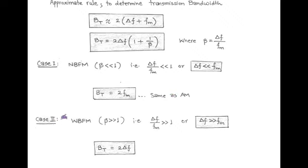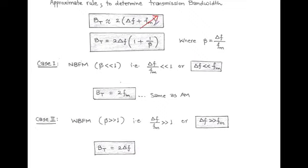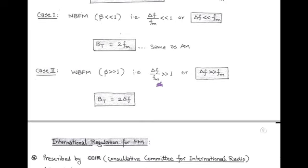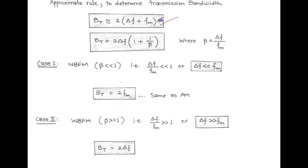Next, in the second case — that is for wide band FM — we have modulation index β greater than 1 radian. So accordingly, ΔF/FM is greater than 1, or ΔF is greater than modulating frequency. After applying this to the transmission bandwidth, we get twice of ΔF, where we neglect modulating frequency as compared to ΔF. So according to Carson's rule, the transmission bandwidth of narrow band FM is 2·FM (same as AM), and in the case of wide band FM, the transmission bandwidth is 2·ΔF.